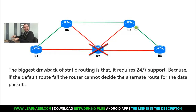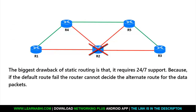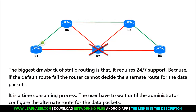The biggest drawback of static routing is that it requires 24/7 support, because if the default route fails, the router cannot decide the alternate route for the data packets. It is a time-consuming process — the user has to wait until the administrator configures the alternate route. To overcome this problem, dynamic routing was introduced.